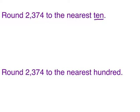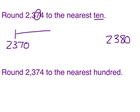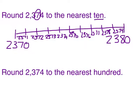I'm going to look for the digit in the tens place, the seven. And that tells me that the two tens this number falls between are 2370 and 2380. I can fill in my number line accordingly. I've counted by ones because I'm rounding to the nearest ten. I can plot the point 2374.